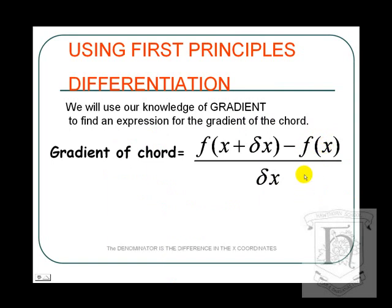On the denominator, the difference in the x coordinates is x plus delta x take away x. And, of course, that just leaves us with delta x. So, the denominator is the difference in the x coordinates.